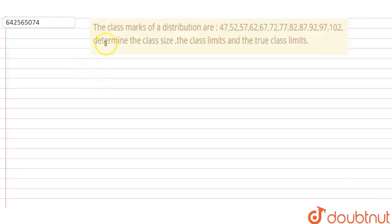Hello everyone, let us look at the following question. The question says the class marks of a distribution are 47, 52, 57, 62, 67, 72, 77, 82, 87, 92, 97, 102. Determine the class size, the class limits and the true class limits.